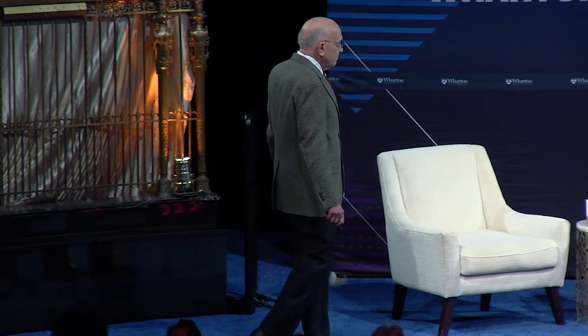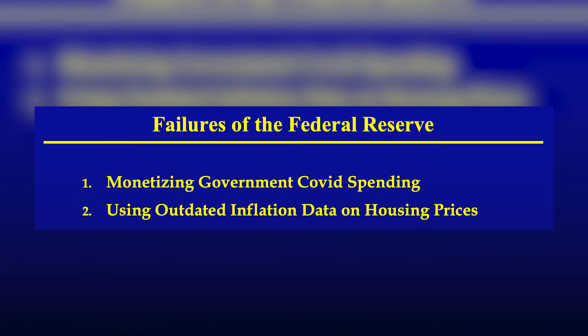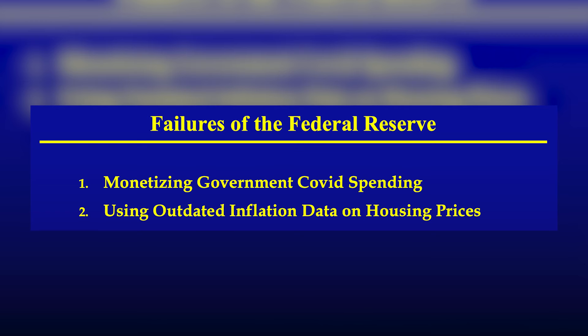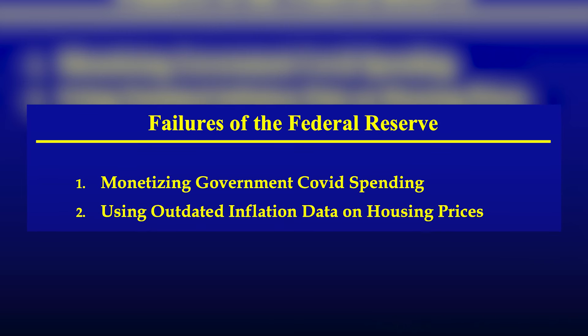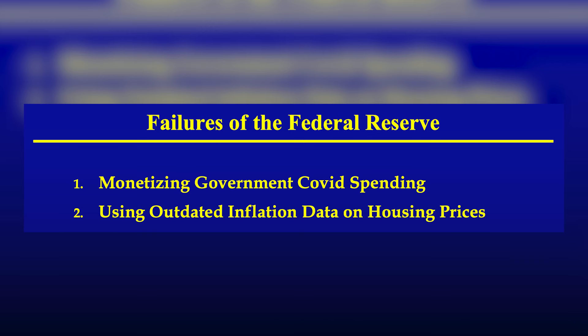What did he do wrong? First, he did exactly what a central banker is not supposed to do — he monetized all the crazy spending plans of the federal government, just shelling out the money. Secondly, he totally misunderstood a critical aspect of the inflation data, greatly underestimating the inflation at the beginning of the inflationary process, and then overestimating the inflation we're having today.